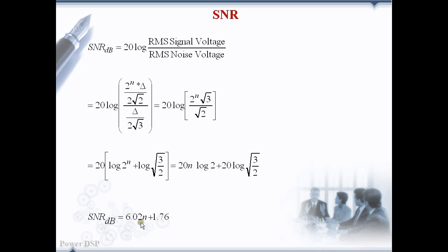N is the bit depth. By substituting the bit depth we can find out the SNR.